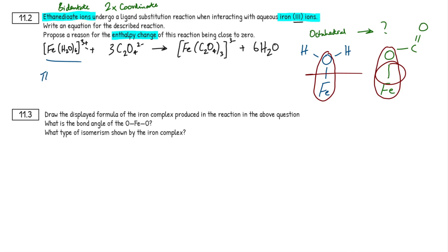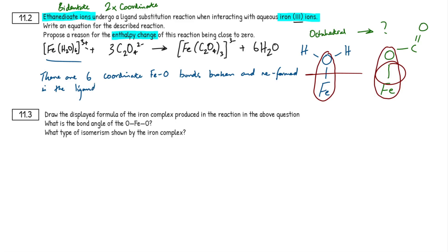So what we write for that mark is: there are six coordinate Fe–O bonds broken and reformed in the ligand substitution. The wording isn't too critical — you just need to state how many bonds there are and that they are the same type, because if a different number were broken versus reformed the enthalpy would be different. That's the second mark done. Bit of theory, bit of thermodynamics — let's move on to question 11.3.